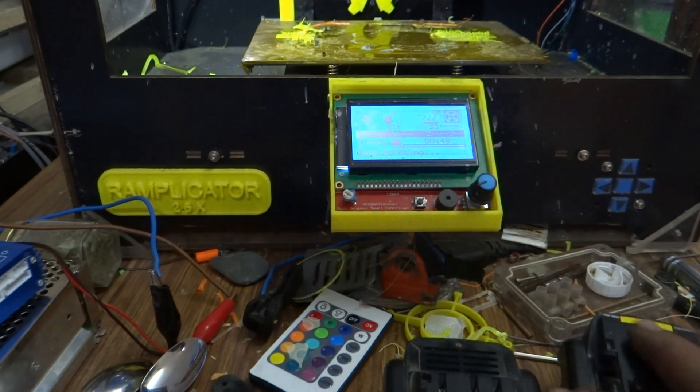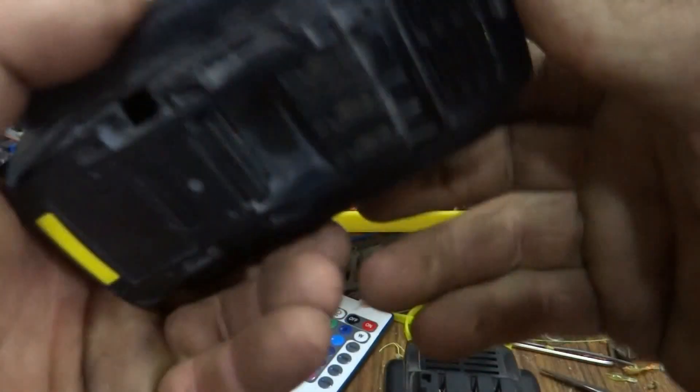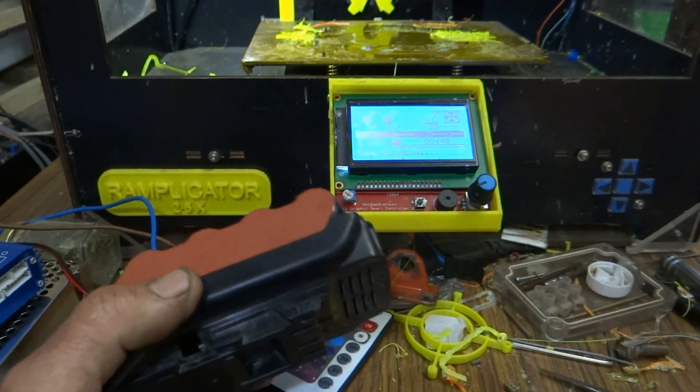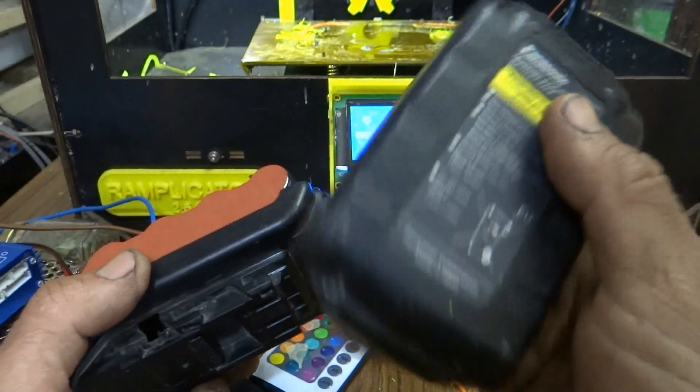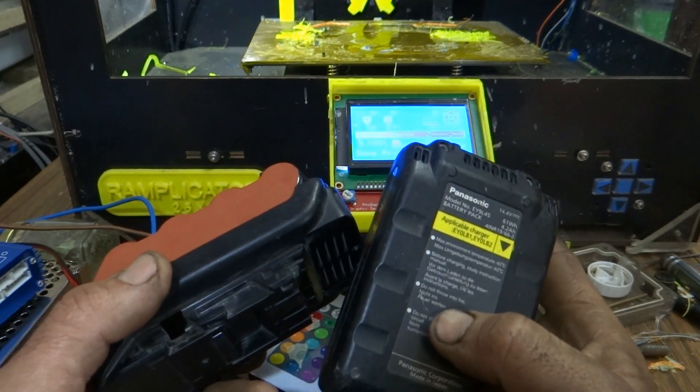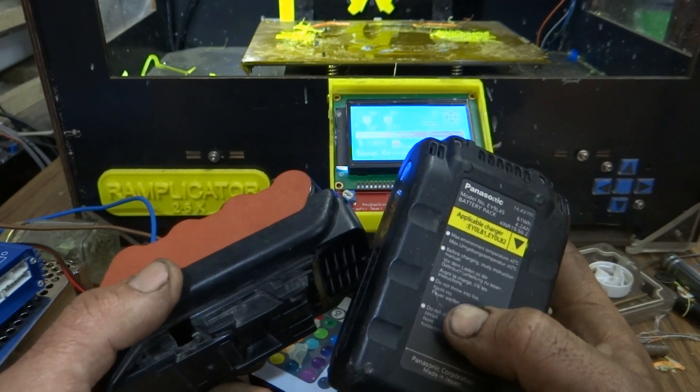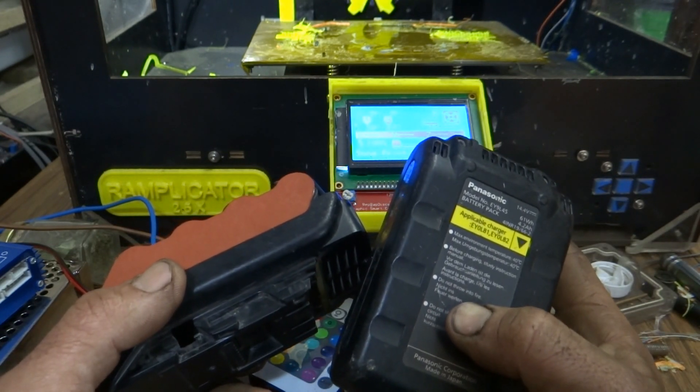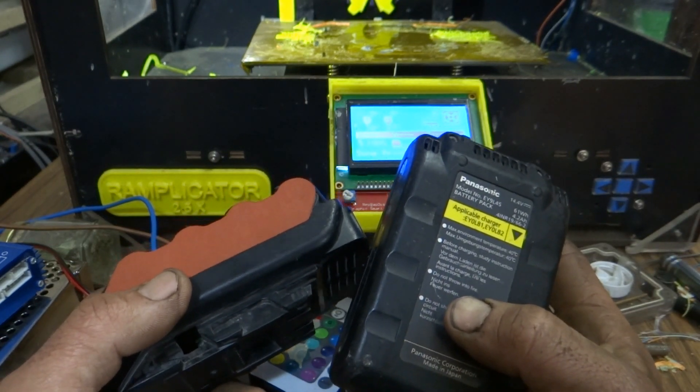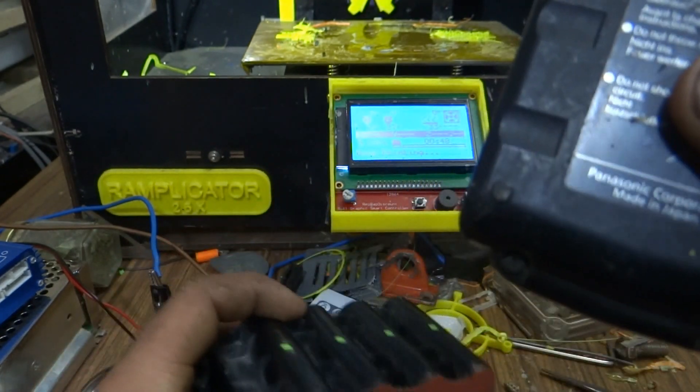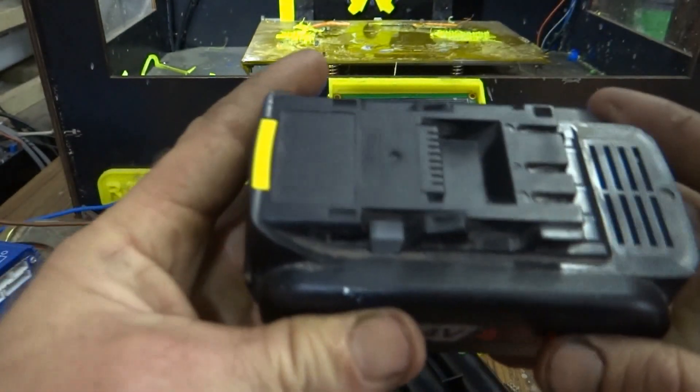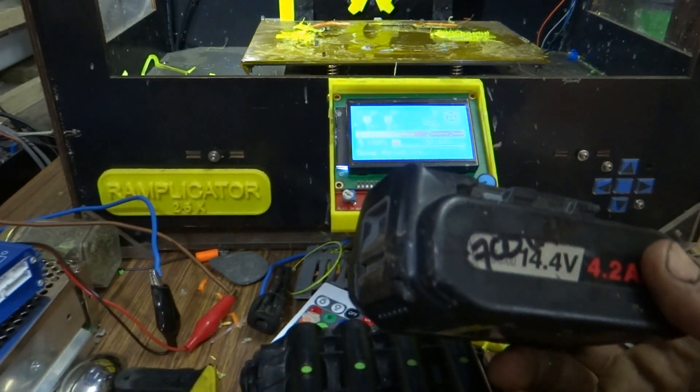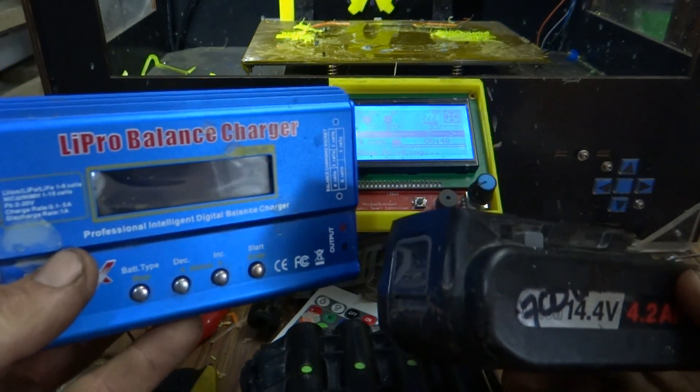Third on the bench, we have battery packs for drills. These are the Panasonic batteries - Panasonic EY9L45s, 4.2 amp hour lithium-ion, 14.4 volts.